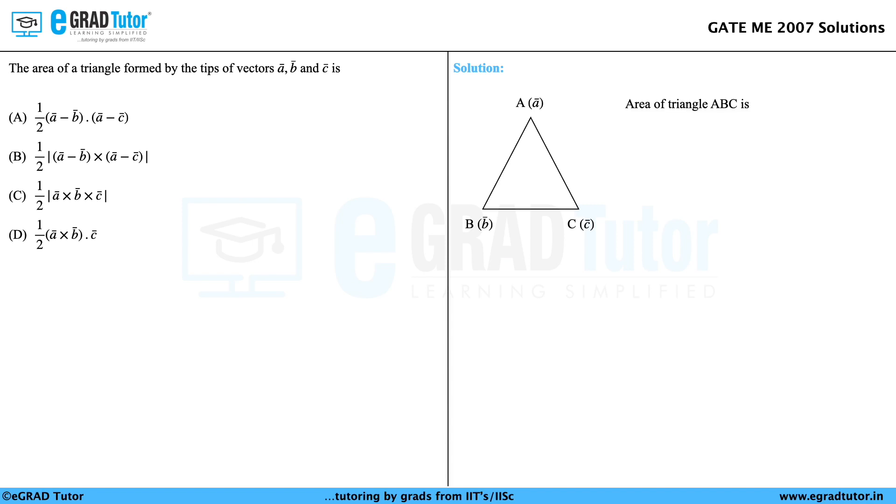Now the area of triangle ABC can be written as half modulus AB bar cross AC bar, which can be written as B bar minus A bar cross C bar minus A bar. Rearranging the terms, we have the area of triangle as half into modulus A bar minus B bar cross A bar minus C bar.